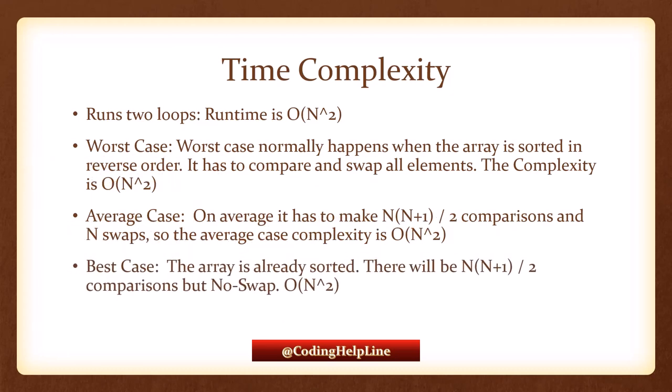In the best-case scenario, this only happens when the array is already sorted. In this case, it also compares all the elements — n multiplied by (n+1) divided by 2 — and there are no swaps. So because of the comparisons, its runtime is again O(n²). In all three cases — best, worst, and average — the runtime of selection sort is O(n²).